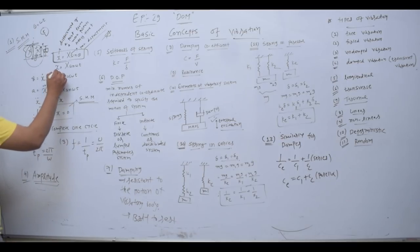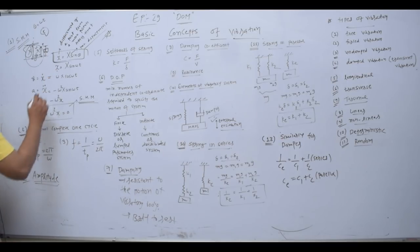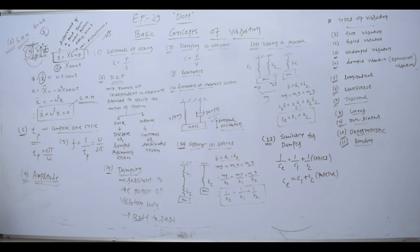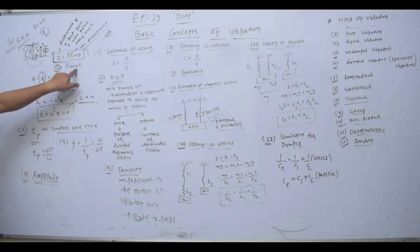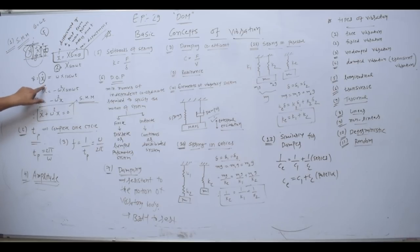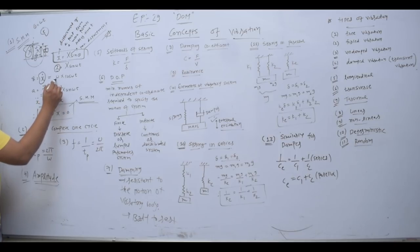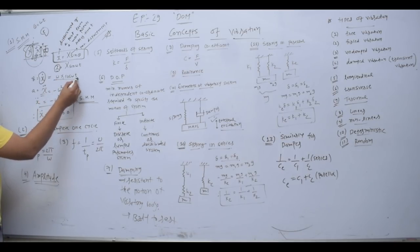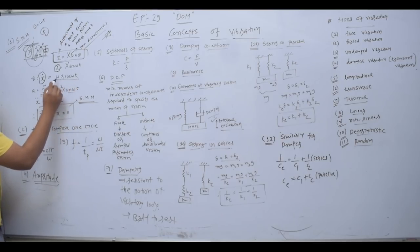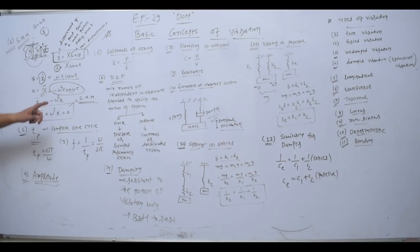Now I have to find velocity by differentiating the displacement equation with respect to time. So ẋ, i.e. velocity, is equal to Xω cos(ωt). Then for acceleration, I do a second differentiation, x double dot, which gives minus Xω² sin(ωt). This basically becomes minus ω² times x.